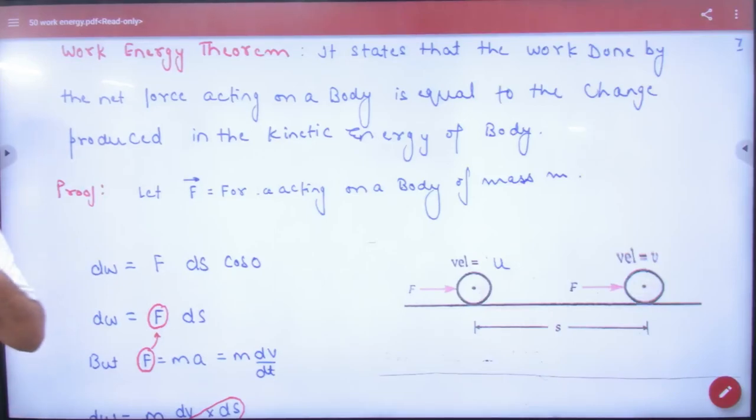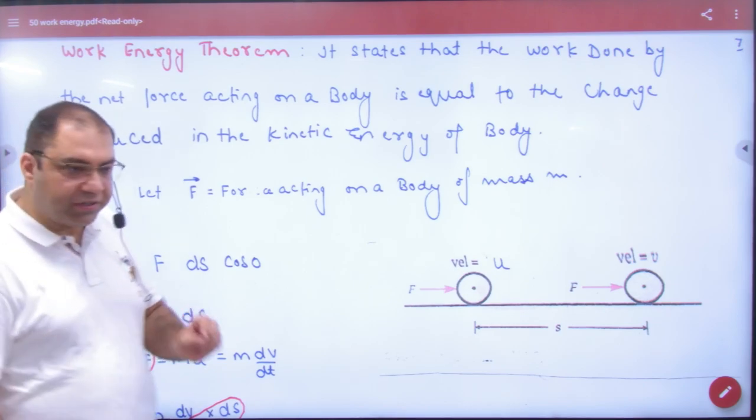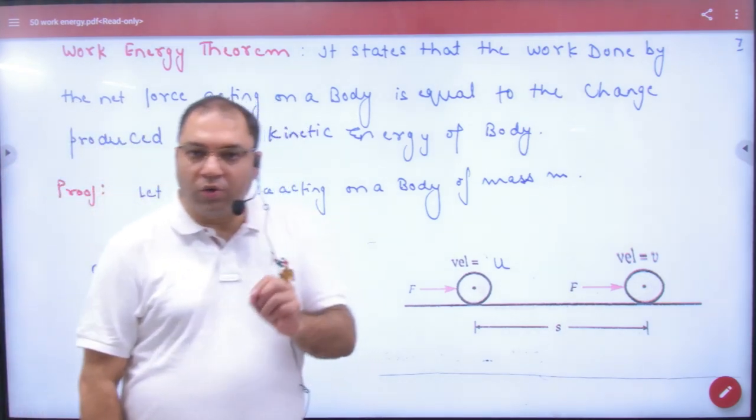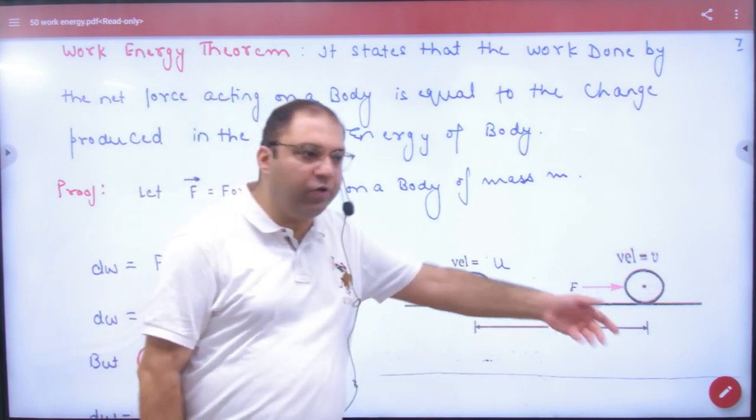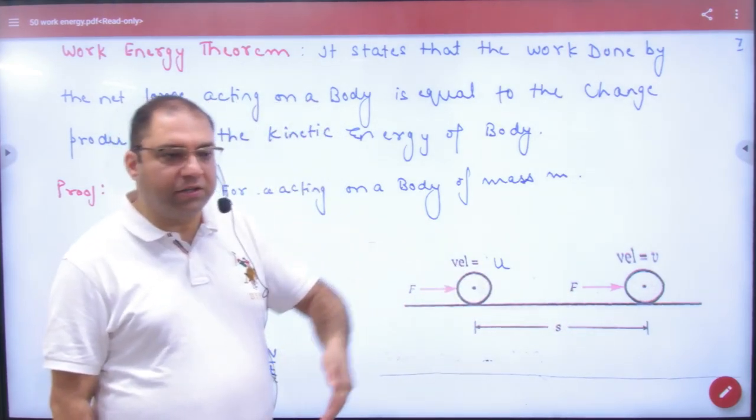According to work energy theory, you tell this: if you think that the velocity of the body is like U and in a while, the velocity of the body is like V, then the kinetic energy has changed.